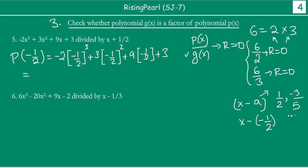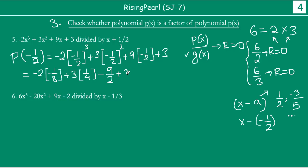So this equals: minus 1/2 times minus 1/2 times minus 1/2 gives minus 1/8. Then minus 2 times minus 1/8 gives plus 2/8, which is 1/4. Then plus 3 times (minus 1/2 times minus 1/2) gives 3 times 1/4, which is 3/4. Then 9 times minus 1/2 is minus 9/2. Plus 3.